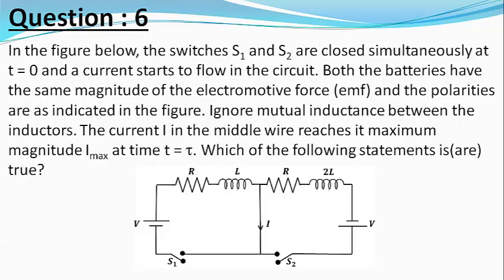The current I in the middle wire reaches its maximum magnitude Imax at time t equals tau. Which of the statements is or are true?